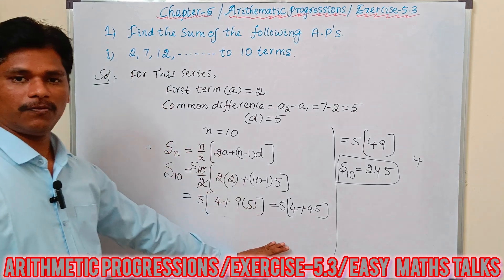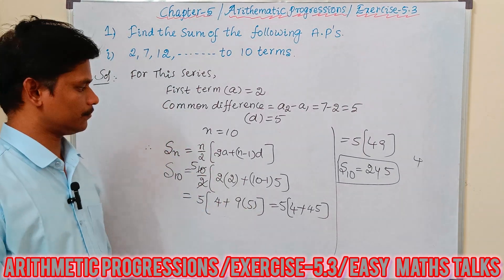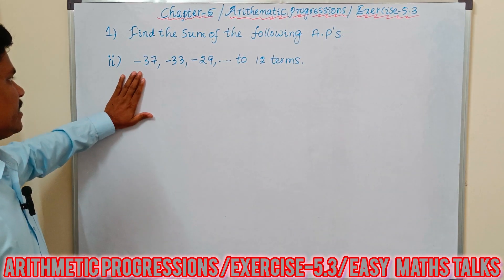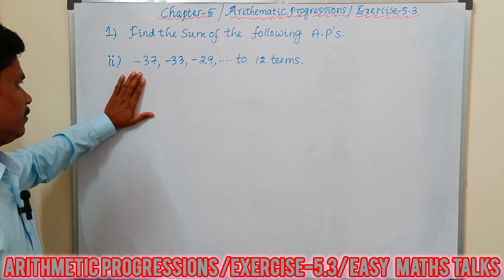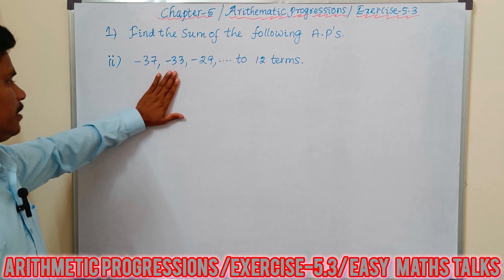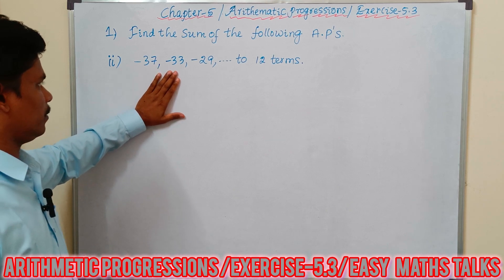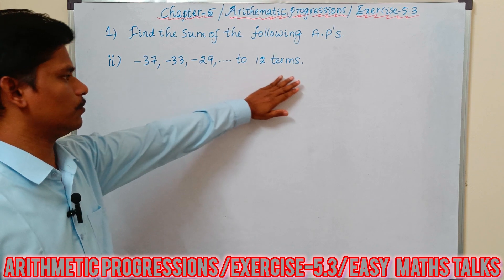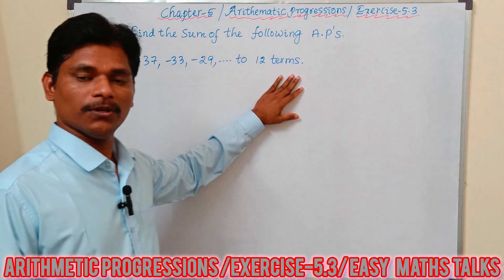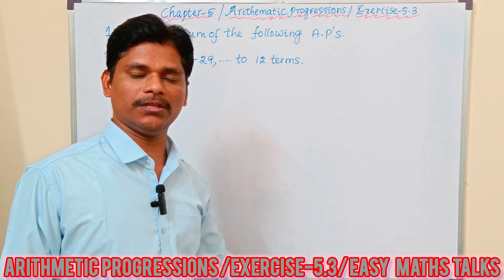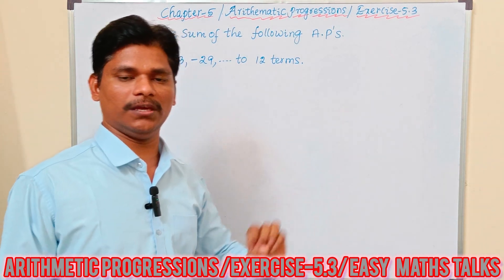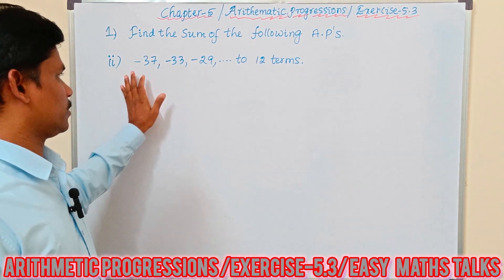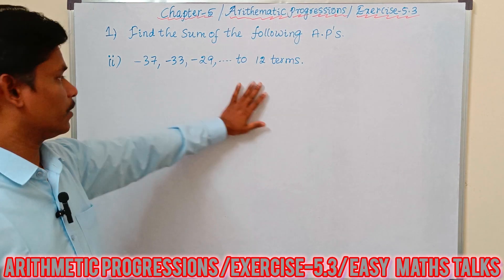The second question: −37, −29, and so on, up to all terms. We have to find out the sum of the given series — sum of all terms.